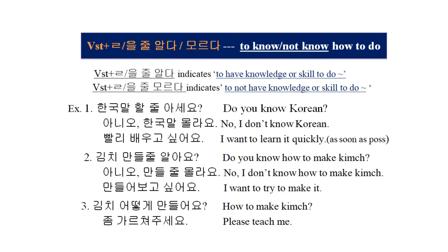Now let's practice verb stem plus 을 줄 알다 and 을 줄 모르다. 을 줄 알다 indicates having knowledge or a skill of doing something, and 을 줄 모르다 indicates not having that knowledge or skill. Example 1: 한국말 할 줄 아세요? — Do you know how to speak Korean? 아니요, 한국말 몰라요. 빨리 배우고 싶어요. — No, I don't know Korean. I want to learn it quickly.